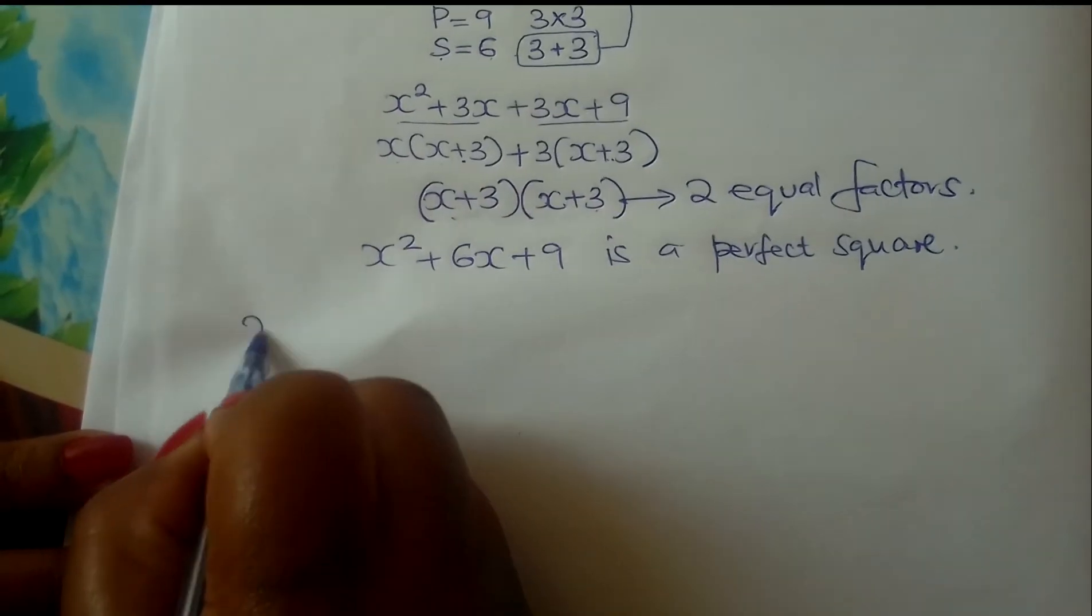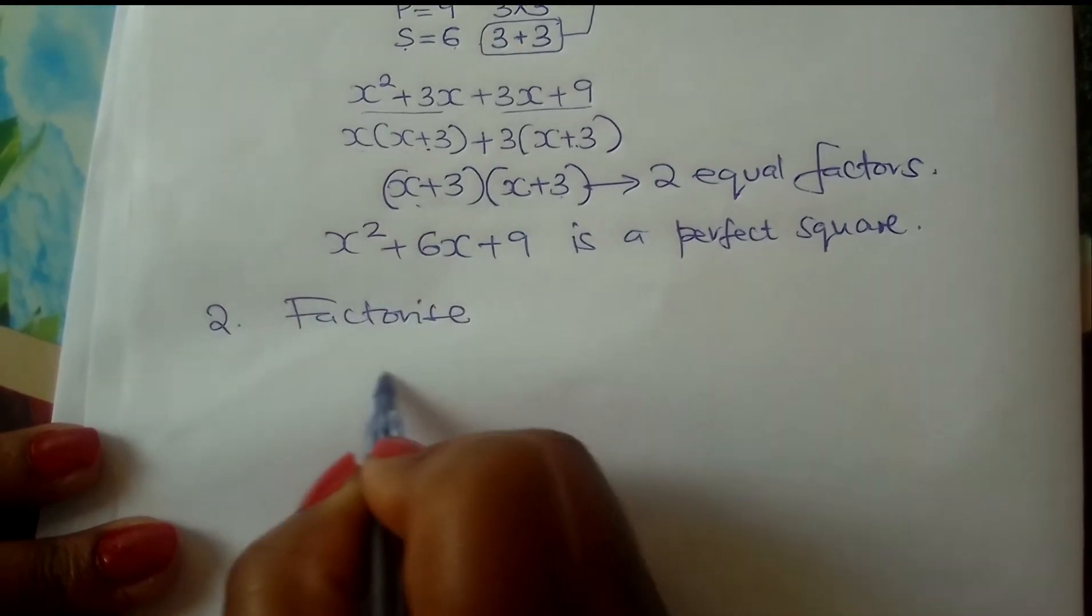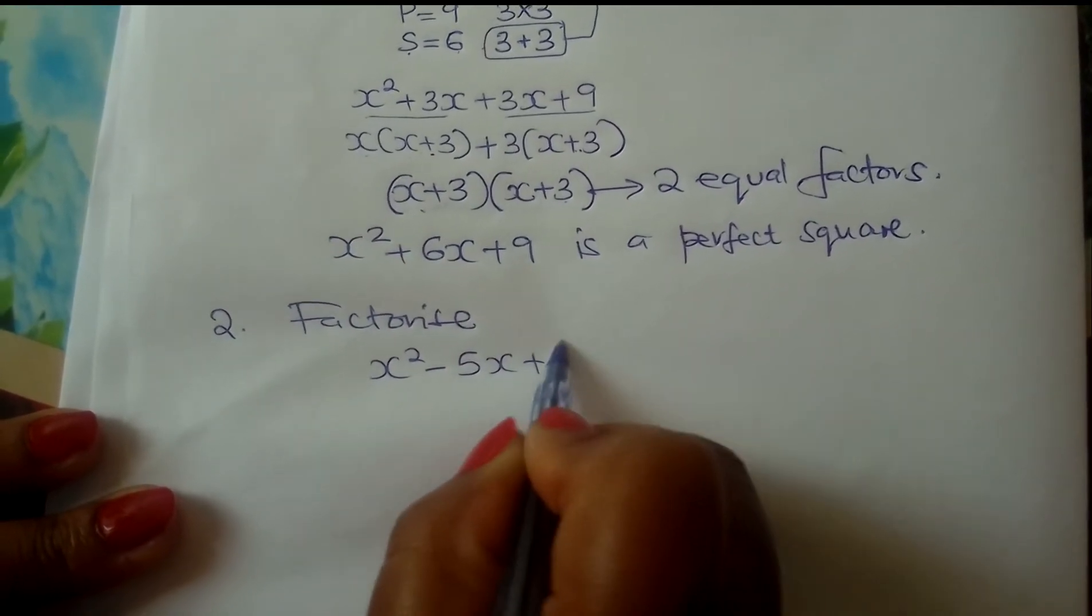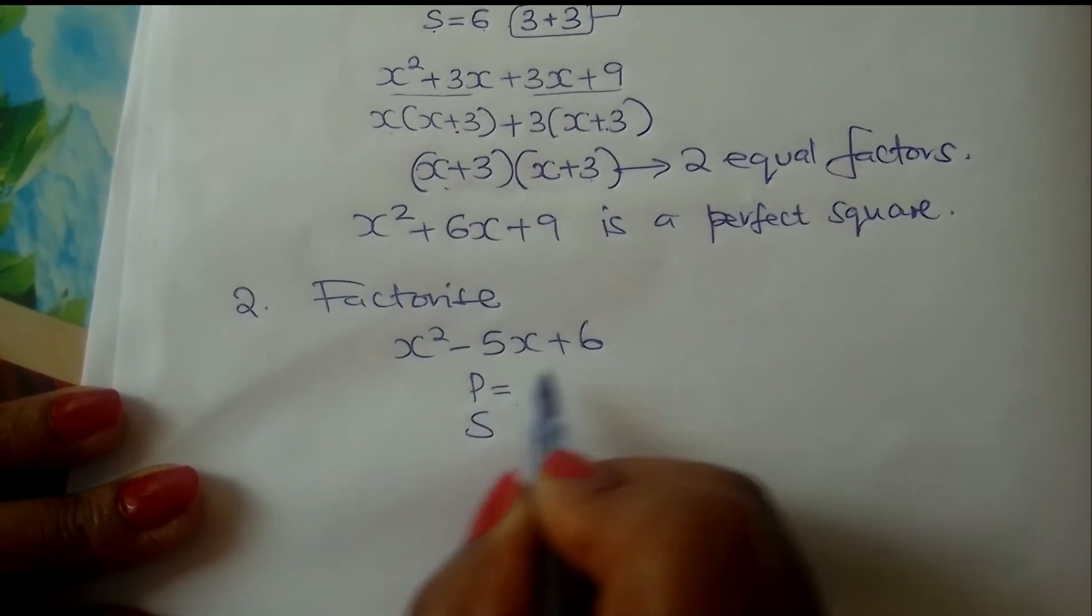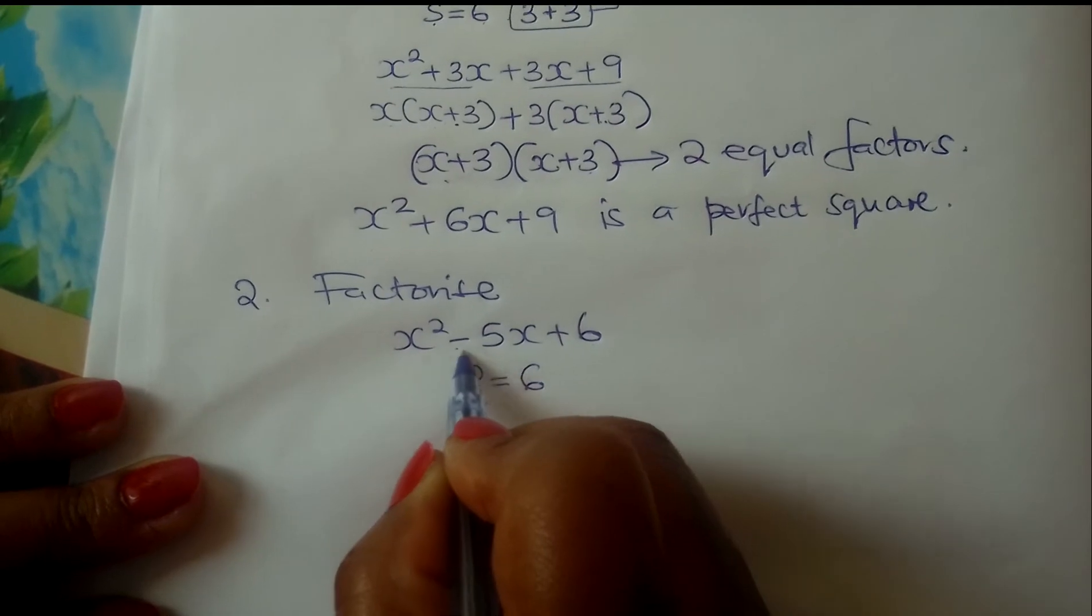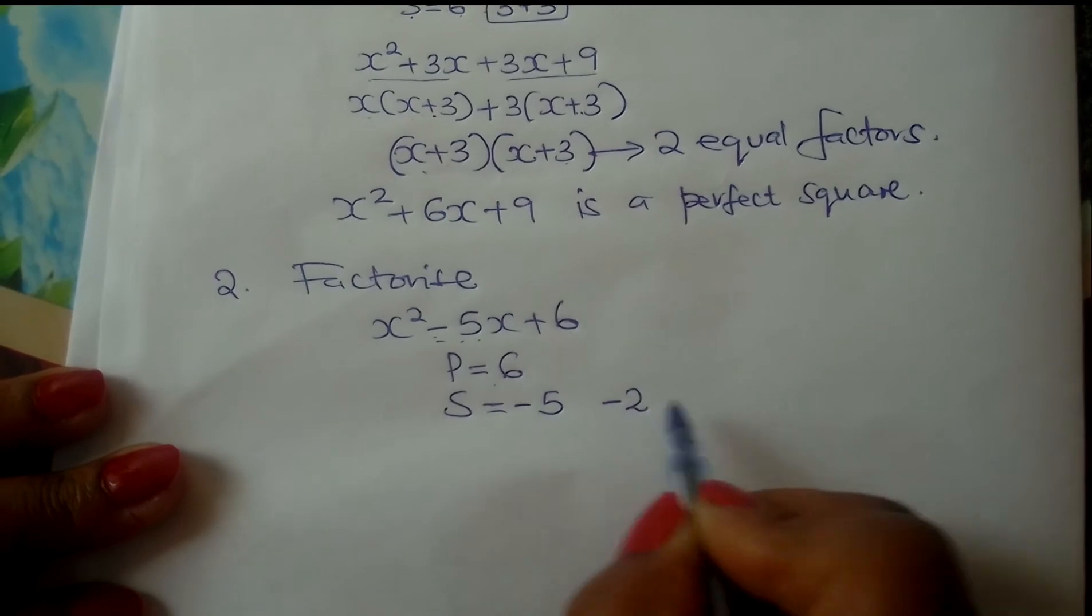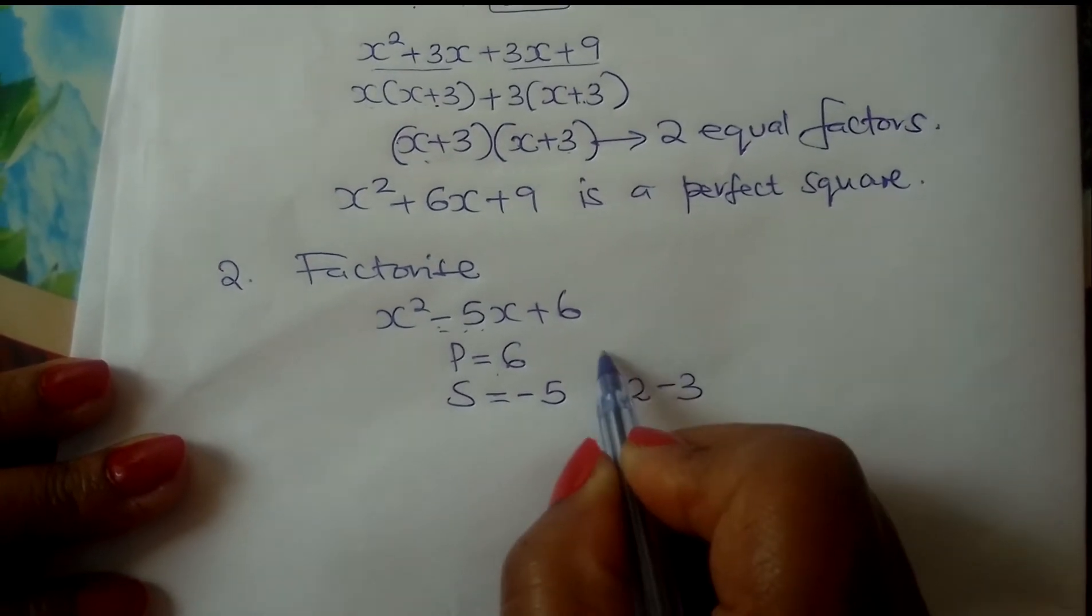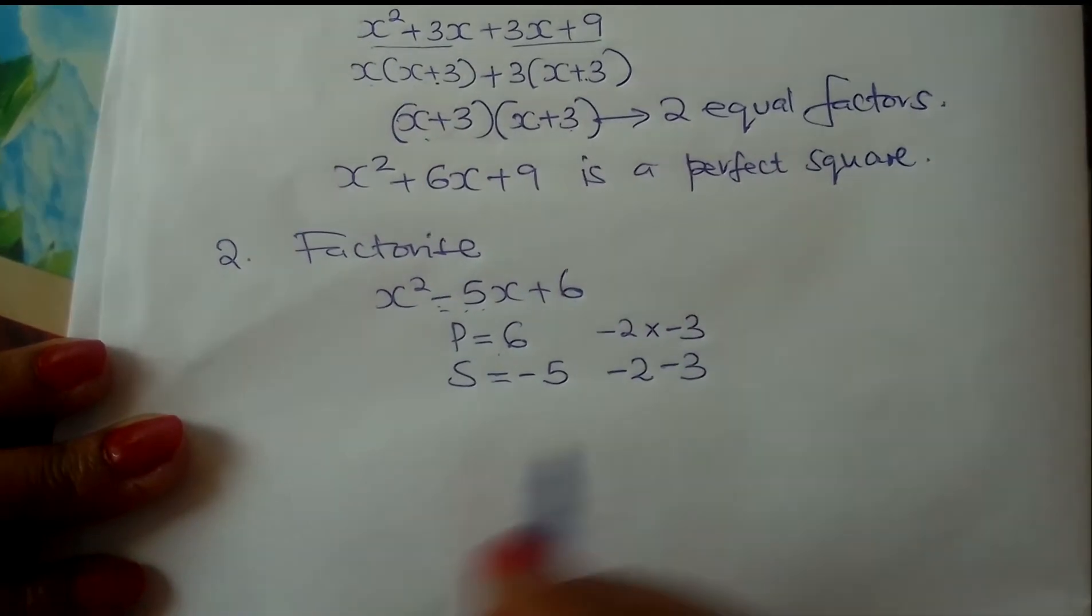Let us look at number 2. Suppose we are told to factorize x² - 5x + 6. Product and sum. The product is 6. The sum is negative 5. The two numbers that you add to get negative 5 are negative 2 and negative 3. And if you multiplied the same numbers, you would get 6.